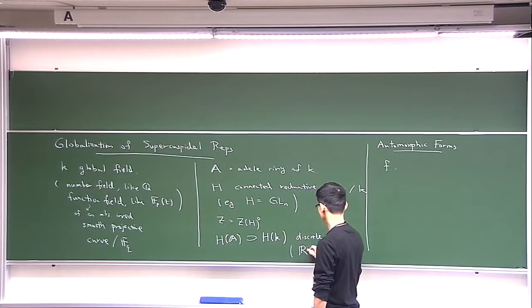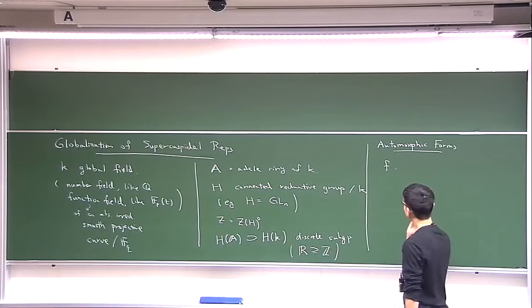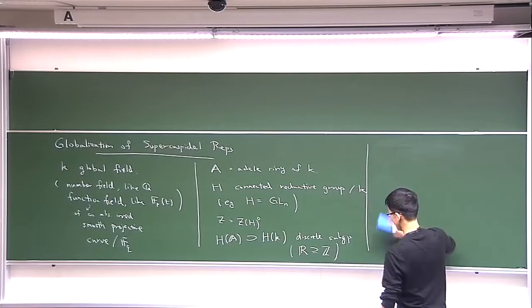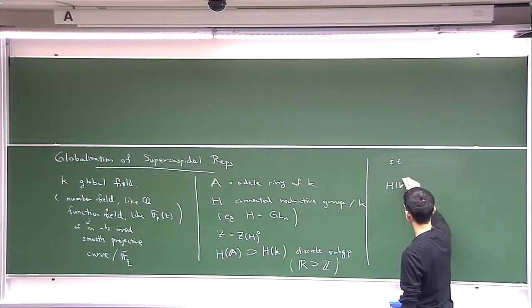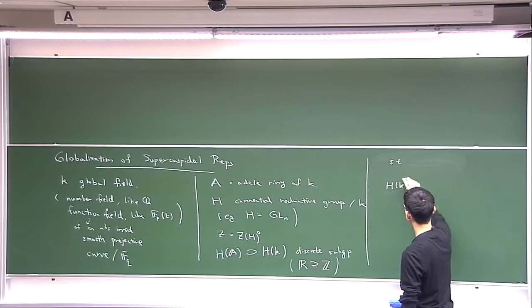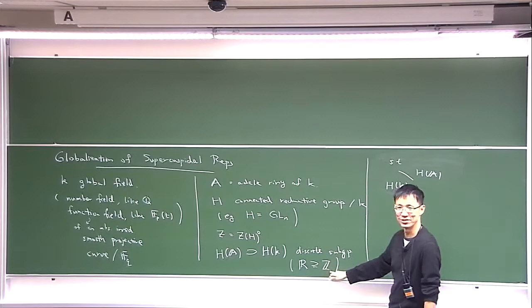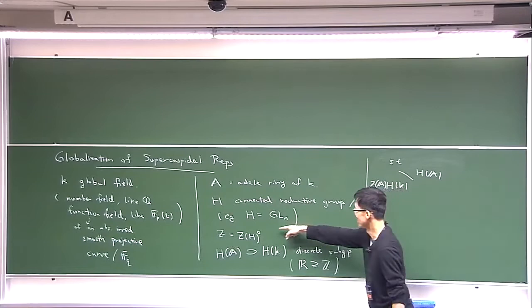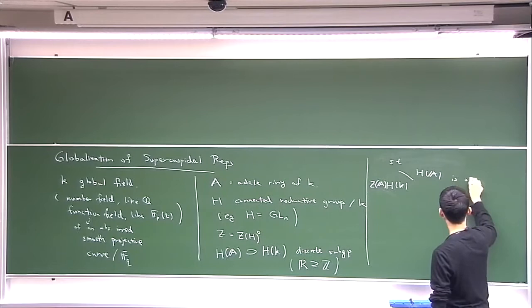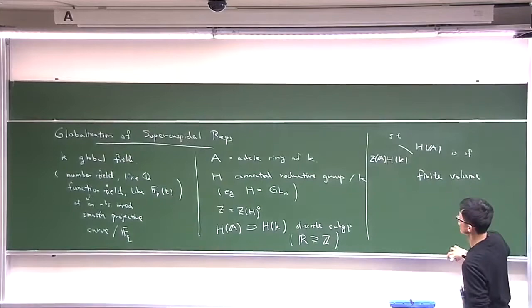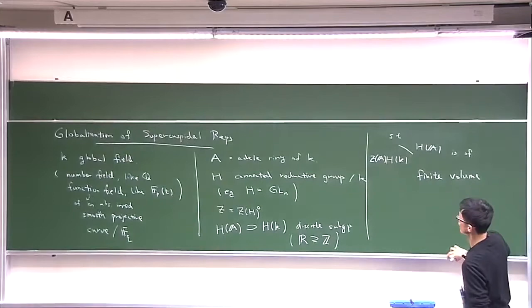It's similar to R containing Z, right. And if you take the quotient — well, if you are in the R containing Z situation, R mod Z is compact. Here it's almost compact — it's not exactly, but if you mod away also this central part, then well, it's still not compact, but at least it's of finite volume. So that's the basic setup.